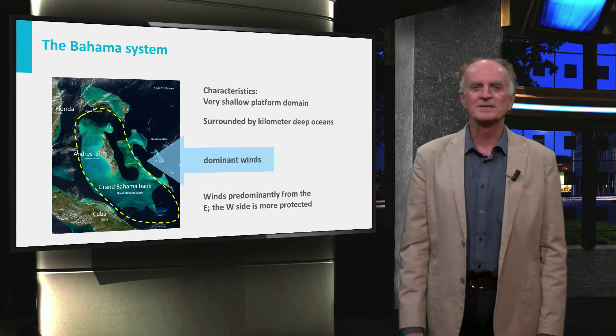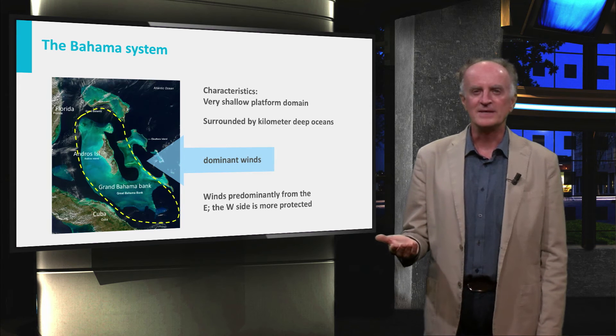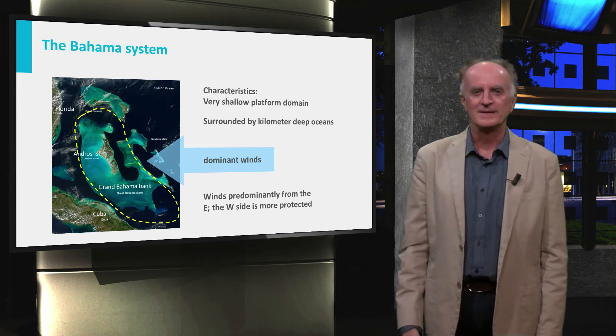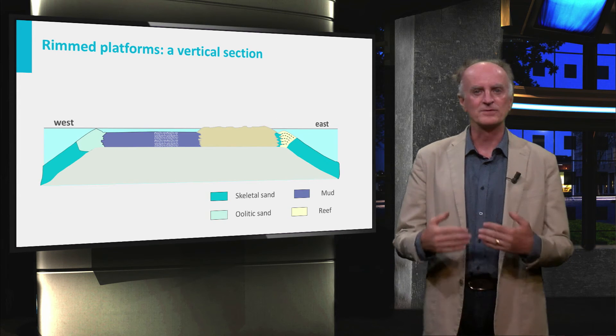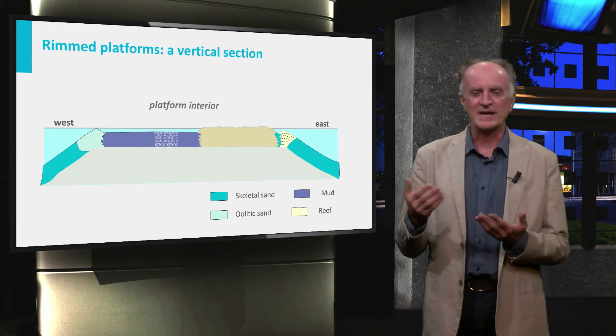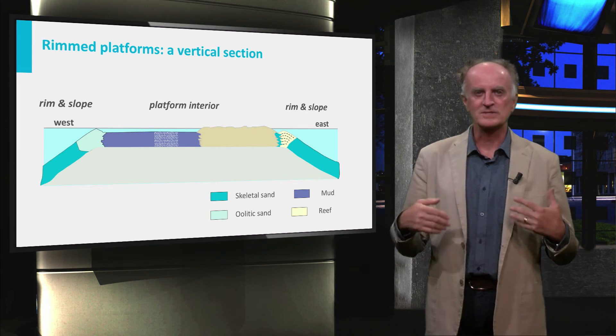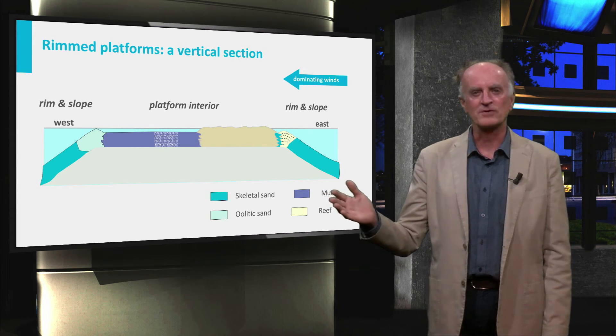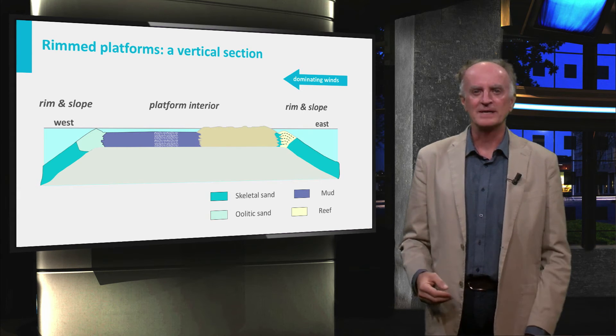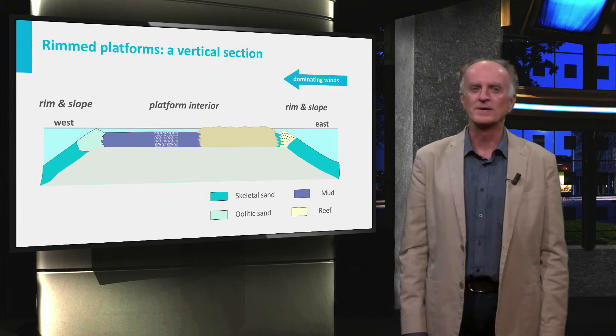Relevant for carbonate systems is the direction of dominant winds and associated storms. These condition currents and impose an asymmetry to the Bahamas platform. Here you see a representative vertical section across the Bahamas carbonate platform. You can see the flat platform interior, flanked by the rims and the steep slopes. You can also see that the winds are predominantly from the east, which implies a clear asymmetry in the type and architecture of the sediments present in the platform.